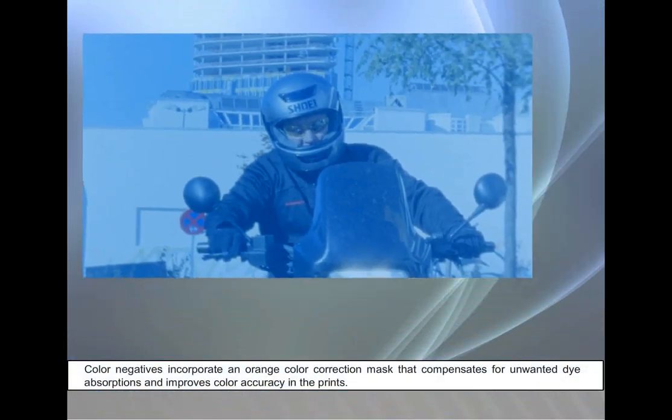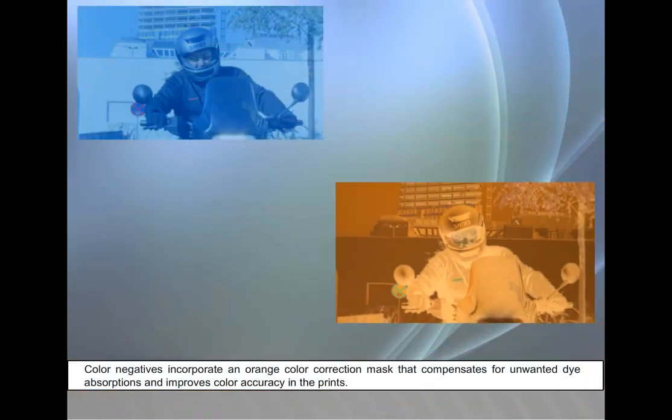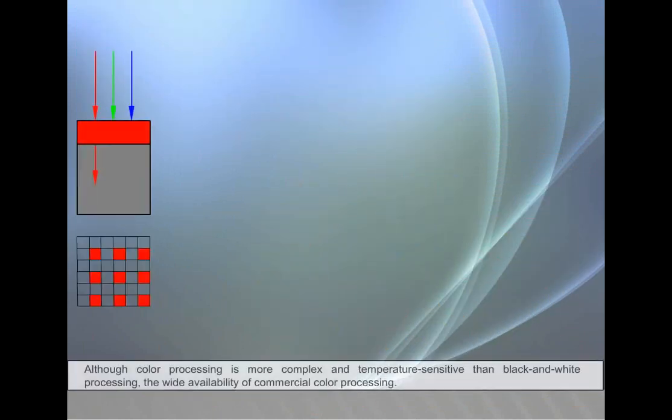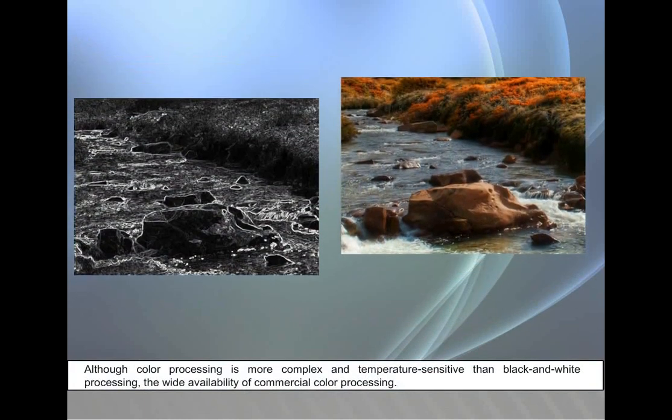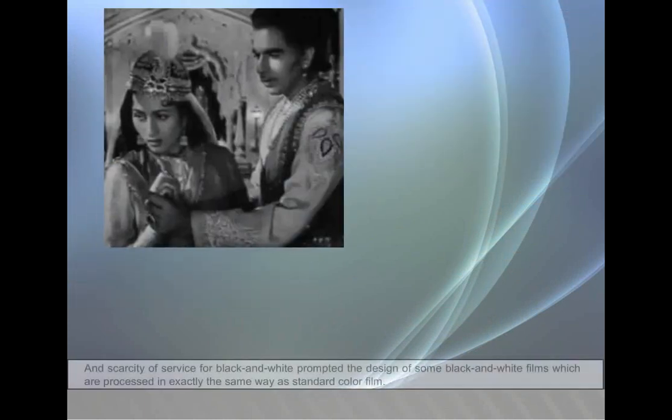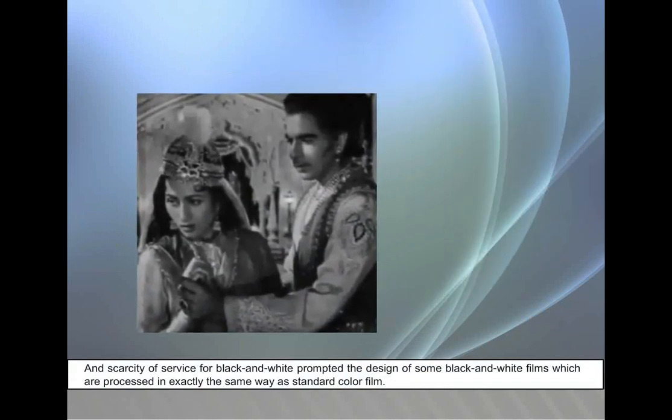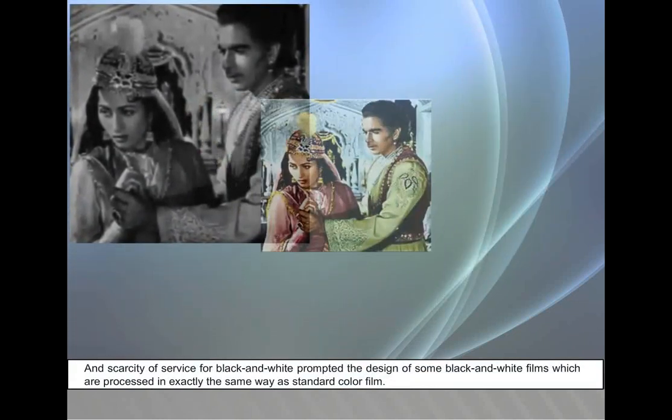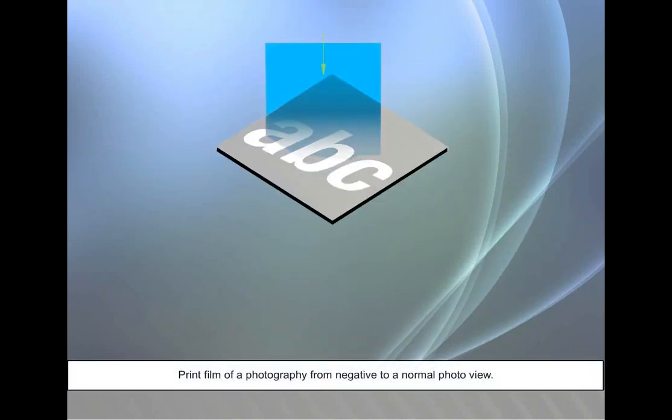Color negatives incorporate an orange color correction mask that compensates for unwanted dye absorptions and improves color accuracy in the prints. Although color processing is more complex and temperature sensitive than black and white processing, the wide availability of commercial color processing and scarcity of service for black and white prompted the design of some black and white films which are processed in exactly the same way as standard color film. Print film of photography from negative to normal photo view.